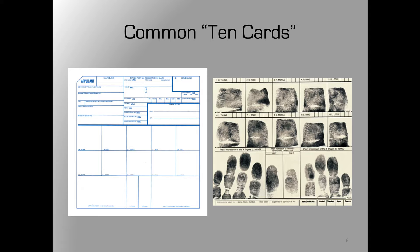We're going to move on to our 10 card. Most of you would probably guess that a 10 card is called that because you have 10 fingers — and you'd be correct. A 10 card is a card that houses the fingerprints of an individual on their right and left hand. What if they only have 9 fingers? Well, it's still called a 10 card, but it's only going to have 9 prints on there.